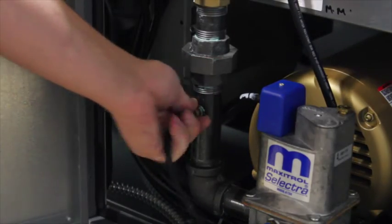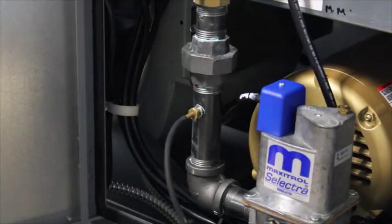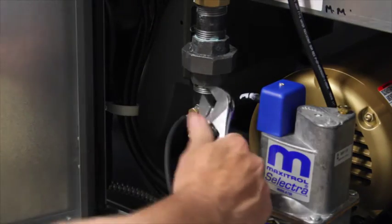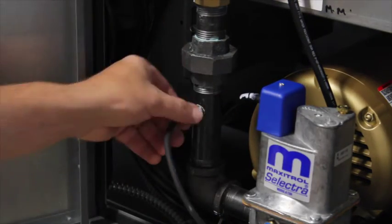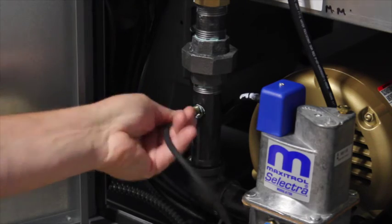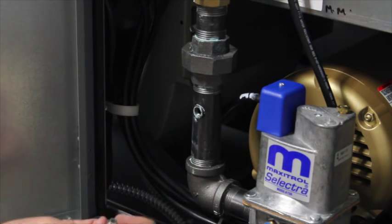Lastly, remove your manometer hose. Once the hose is removed, reinstall the 1⁄8 inch pipe plug and tighten. Once the pipe plug is installed, the startup is complete. Be sure to close all access doors and tighten the latches prior to leaving the equipment.